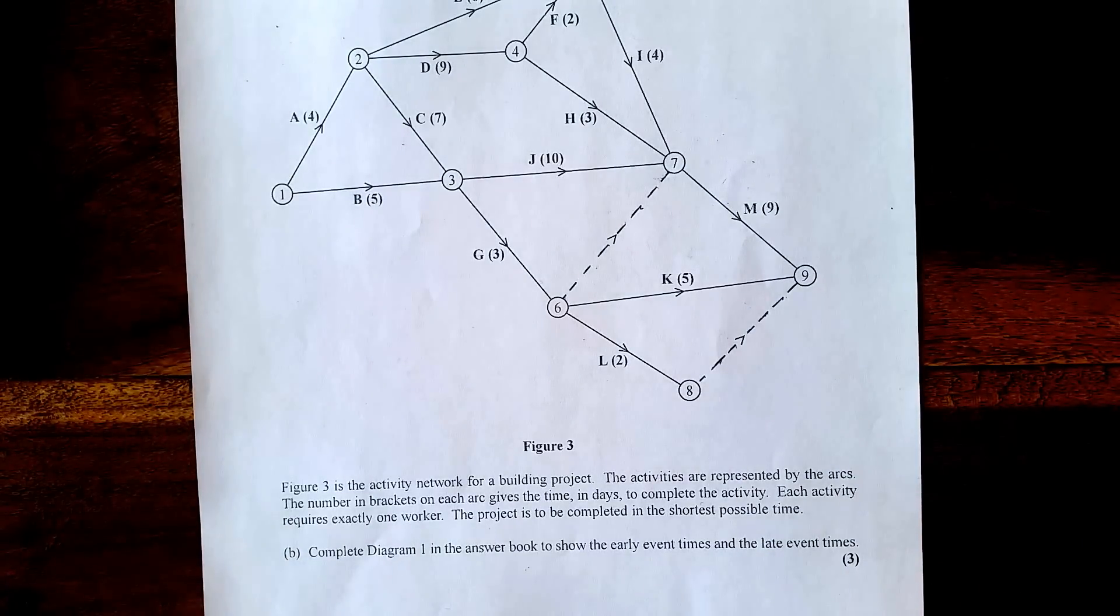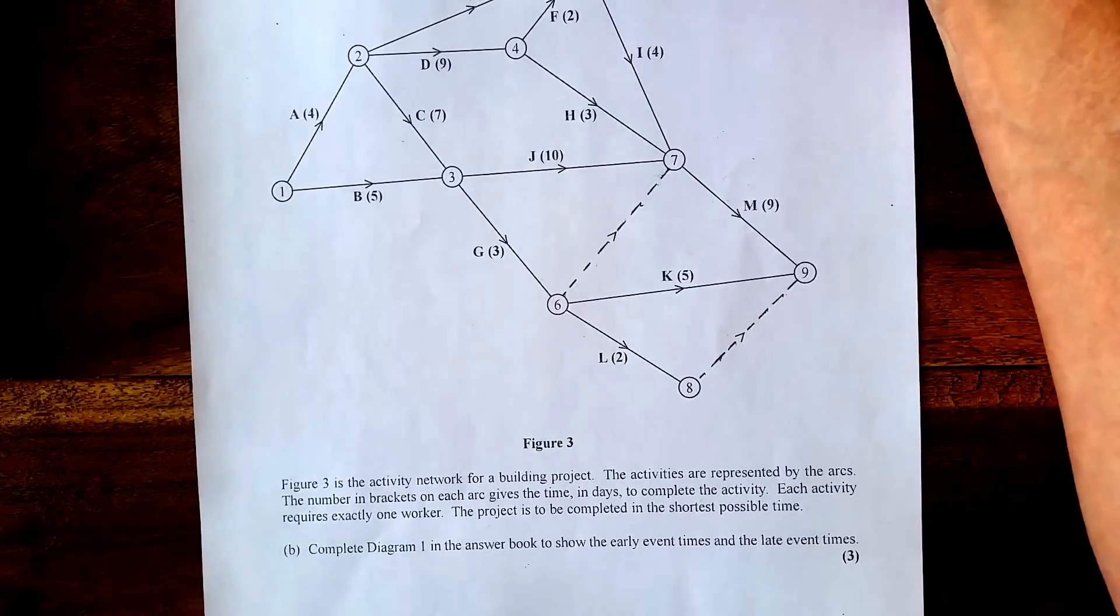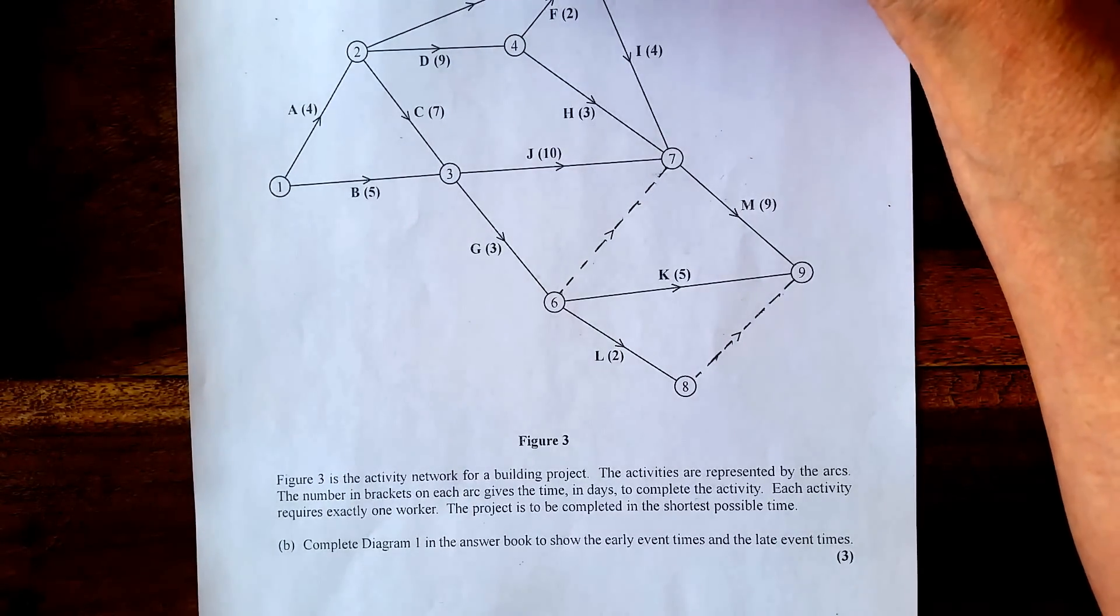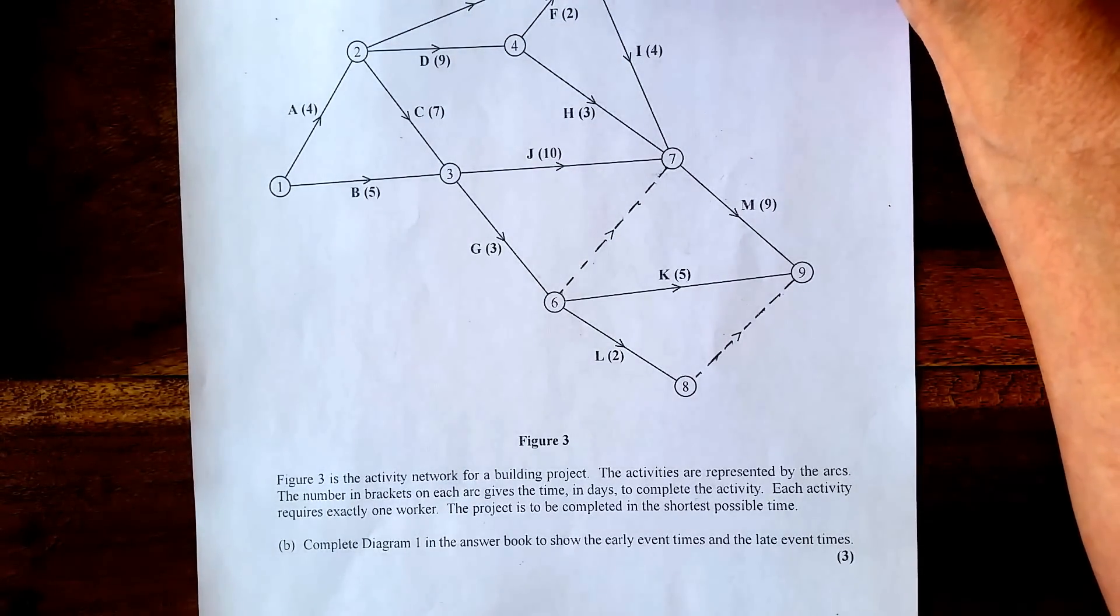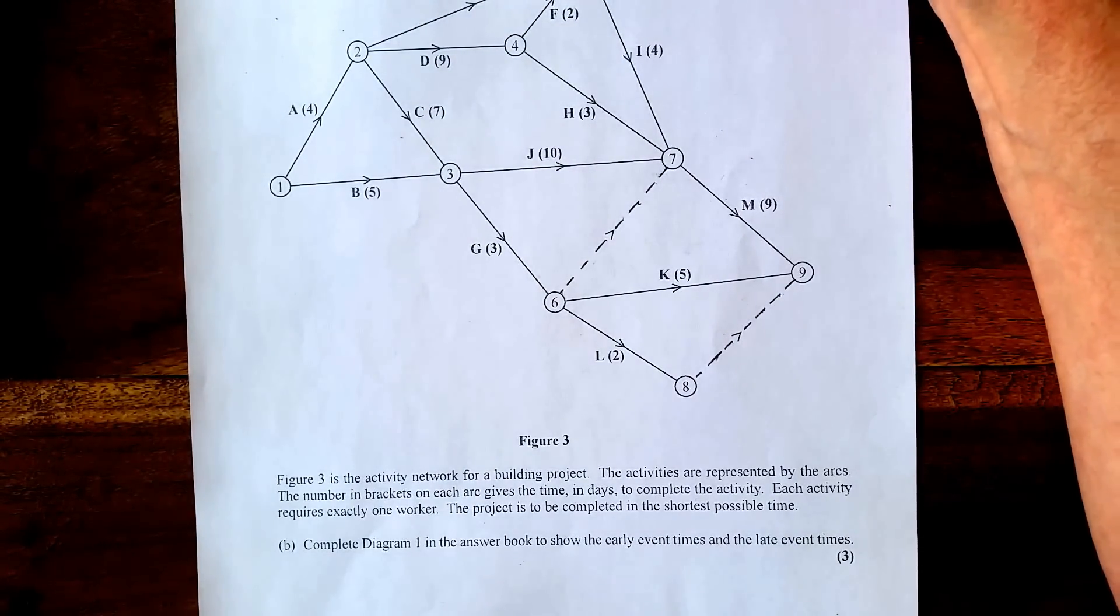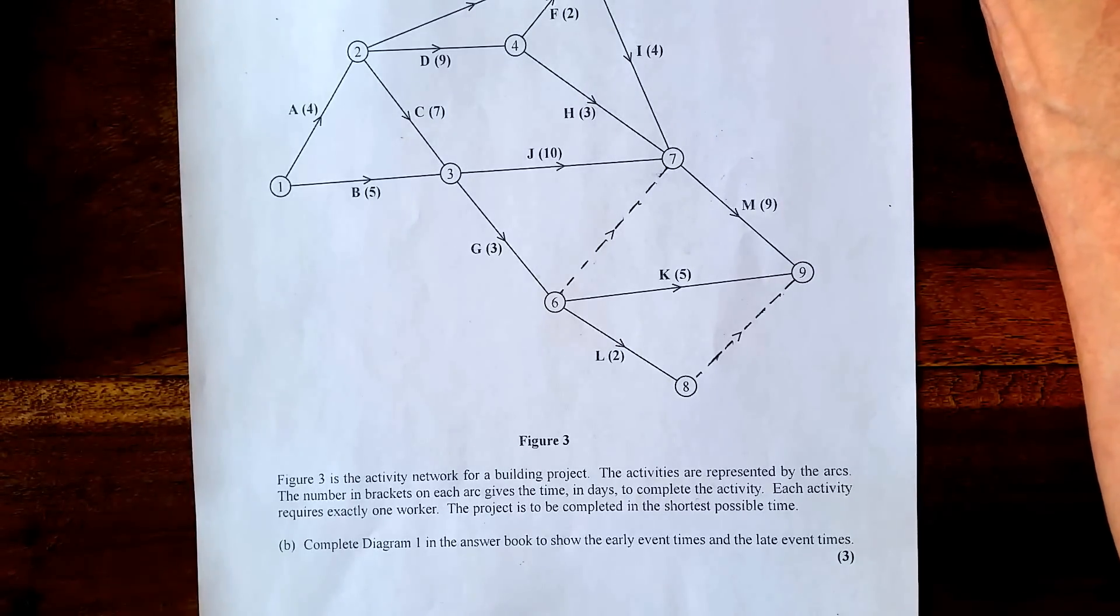Question 7a and b is about critical path analysis. In part A, it says in the context of a critical path analysis, define the term total float. I'm going to come back to that one because I think it's easy to explain after I've done part B.